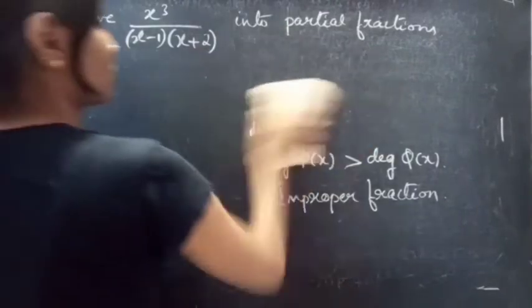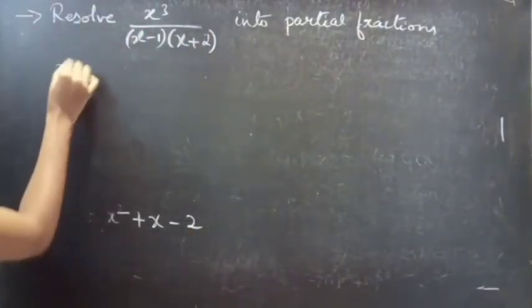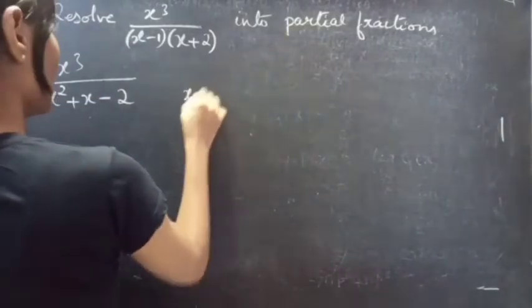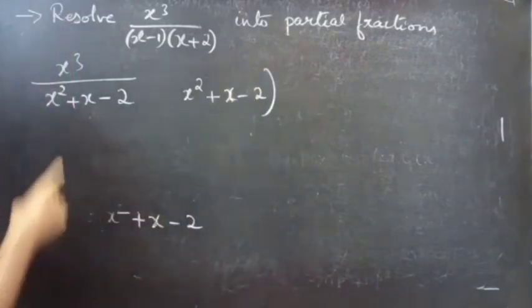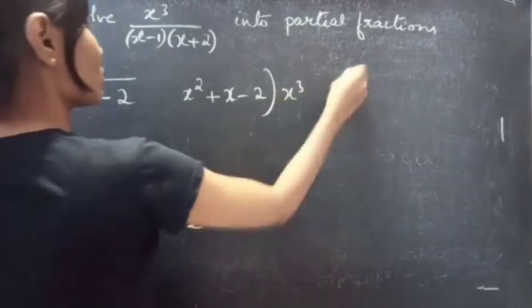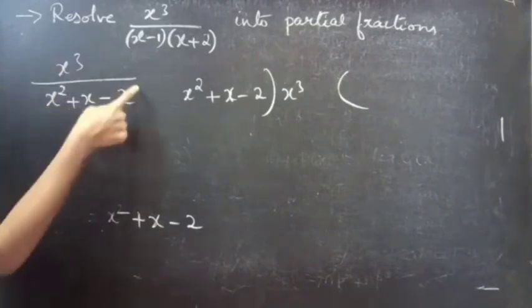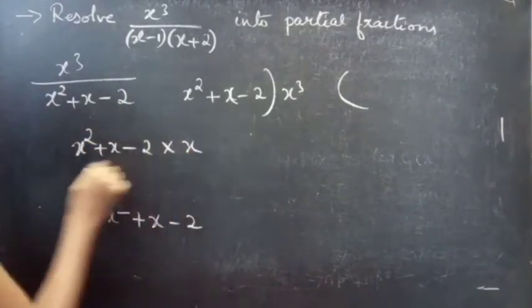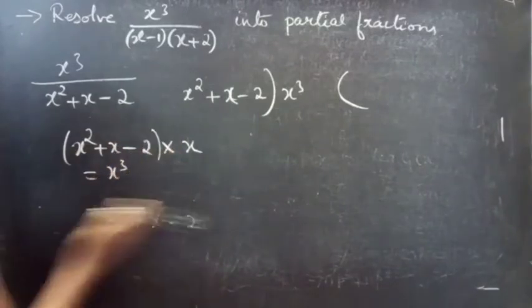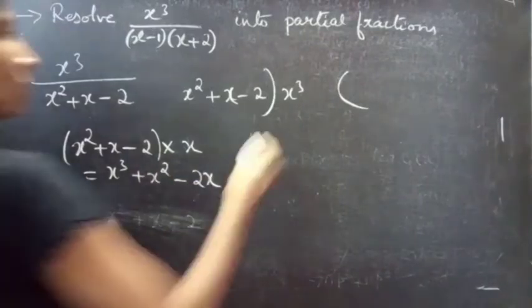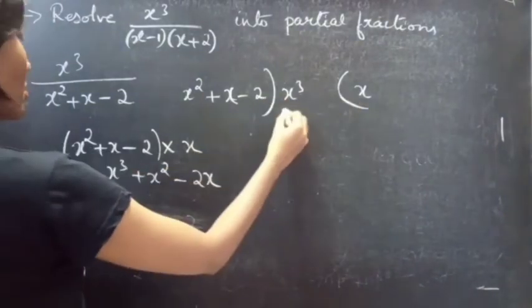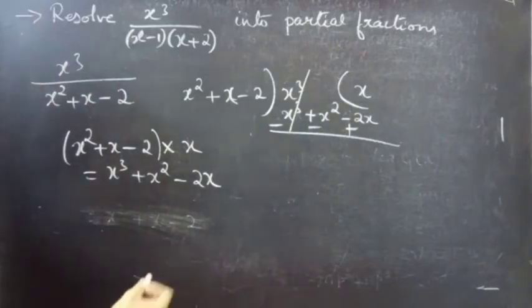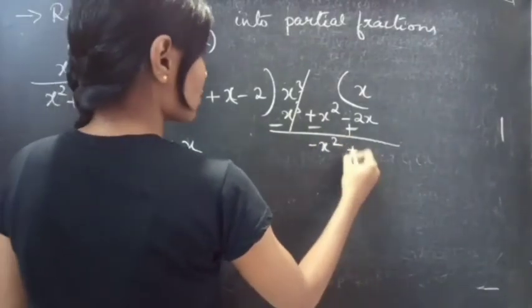For that, we will consider the fraction x cubed by (x squared plus x minus 2) and divide the numerator by the denominator. (x squared plus x minus 2) times x equals x cubed plus x squared minus 2x. Change the sign: x squared minus x squared gets cancelled and we get minus x squared plus 2x.